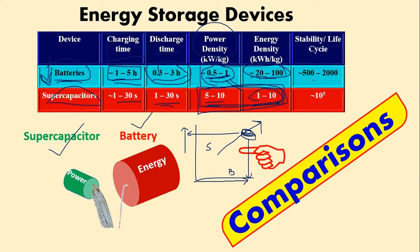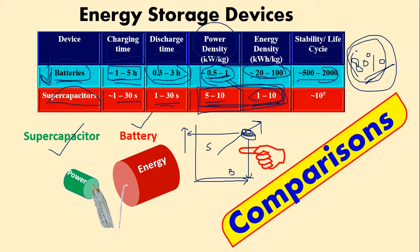Now look at the life cycle stability. Life cycle means how many charge-discharge cycles a device can sustain. For a battery, this is around 500 to 2000 cycles — after 2000 charge-discharge cycles, the battery still gives around 80% of its capacity.